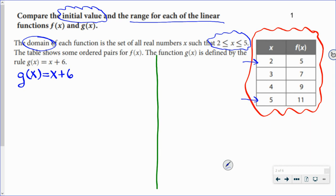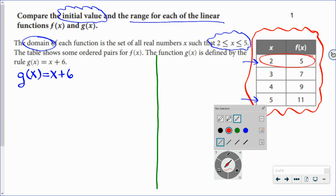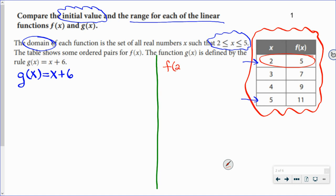So that makes this one kind of easy. My initial value, looking at the table, is the first one. When x is 2, f(x) or y has a value of 5. So my initial value is at 2, y is 5.